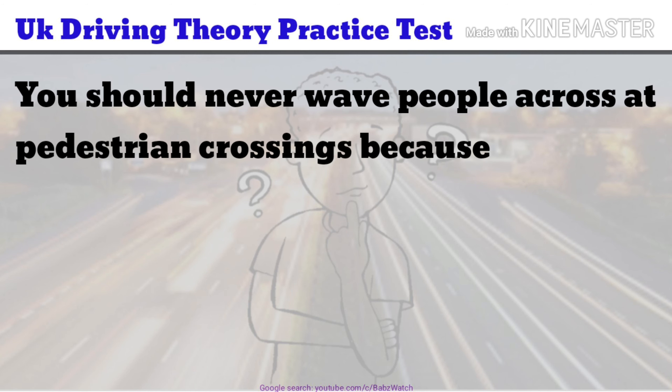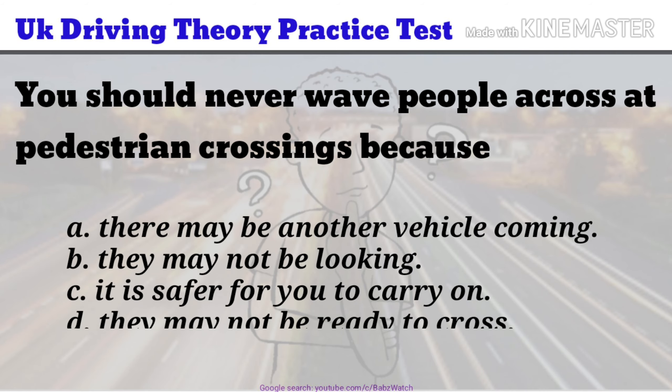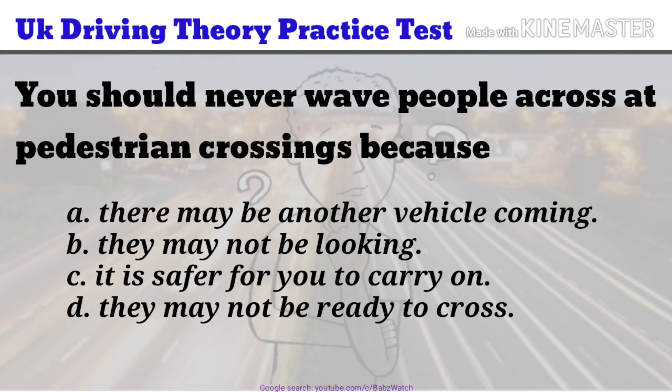UK Driving Theory Practice Test Question 22 of 50. You should never wave people across at pedestrian crossings because: A. There may be another vehicle coming. B. They may not be looking. C. It is safer for you to carry on. D. They may not be ready to cross. The correct answer is A.